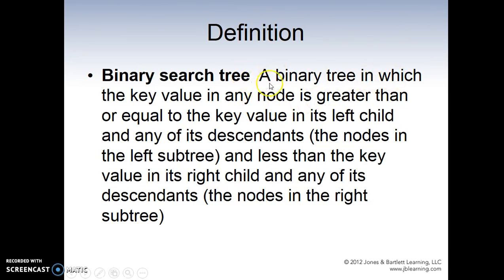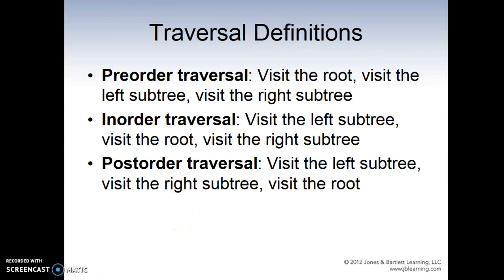A binary search tree is a binary tree in which the key value in any node is greater than or equal to the key value in its left child and any of its descendants, and less than the key value in its right child and any of its descendants. Now, in the case of the tree, we have three types of traversals: pre-order, in-order, and post-order.